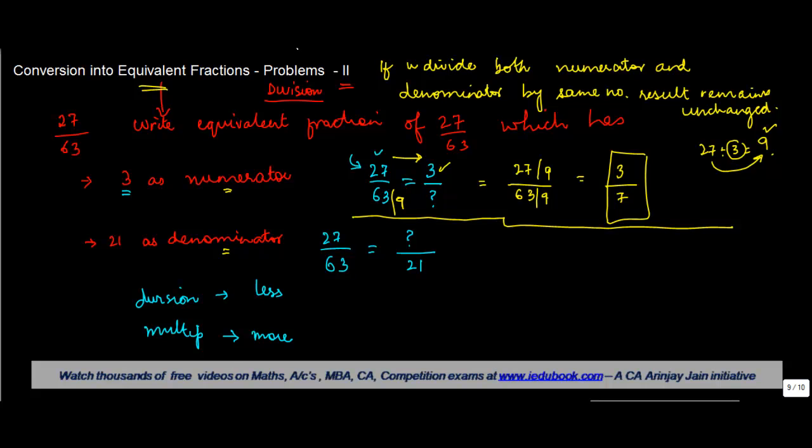Similarly, in the second example, from 63 the number is reducing to 21. The reduction happens only when there is division of a given number by some other number. To find out what number 63 has been divided by to give 21, we divide 63 by 21 and find that 21 times 3 gives us 63.